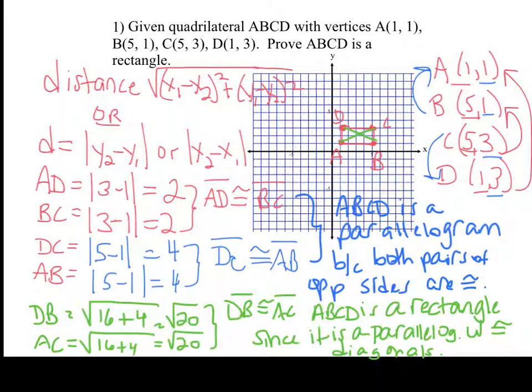Distance formula — easiest way to go for a rectangle. That's it for the rectangle. Let's move on to the rhombus.